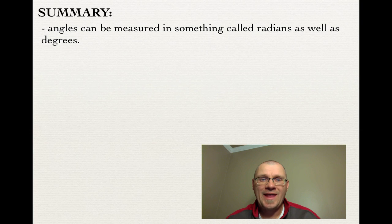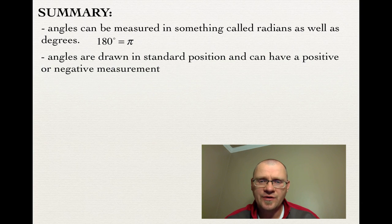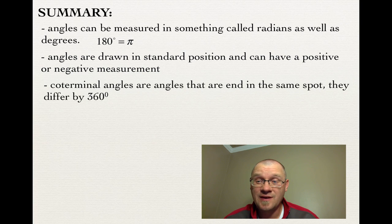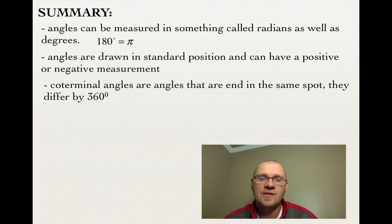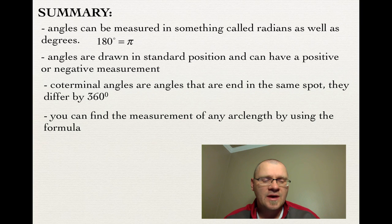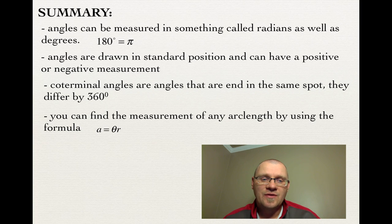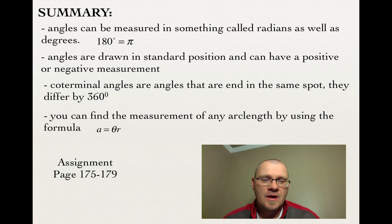In summary: angles can be measured in radians as well as degrees, and 180 degrees equals π radians — that's really key. Angles are drawn in standard position and can have positive or negative measurements. Coterminal angles are angles that end in the same spot and differ by 360 degrees — one full rotation either clockwise or counterclockwise. You can find the measurement of any arc length using the formula A equals theta times R, where theta must be in radians, and A and R must have the same units. Your assignment is on pages 175 to 179. Good luck.